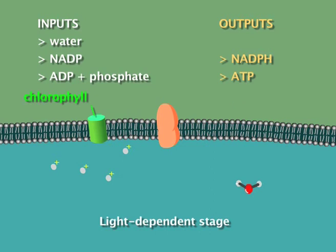However, the other outputs, ATP and NADPH, become essential inputs for the second stage of photosynthesis.